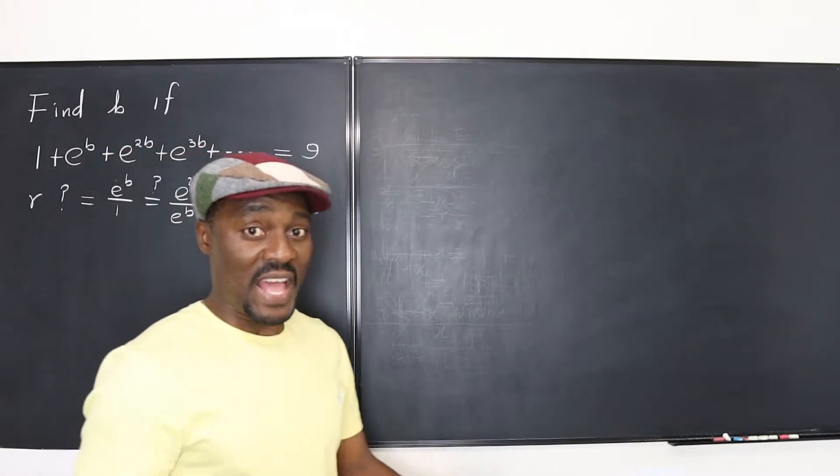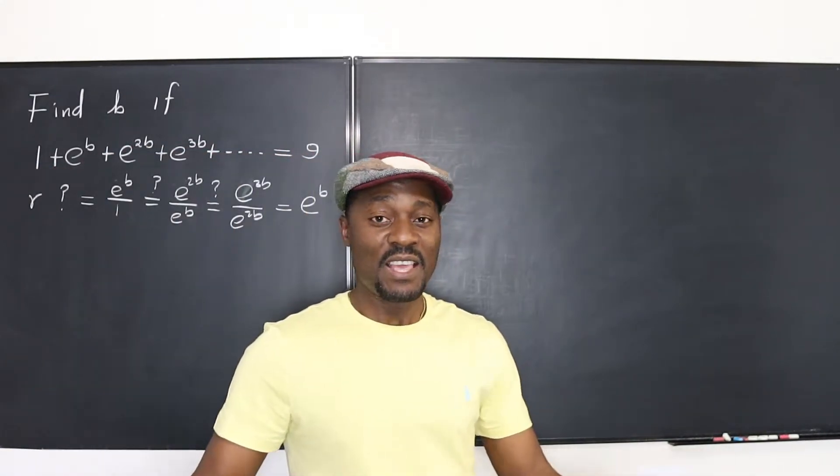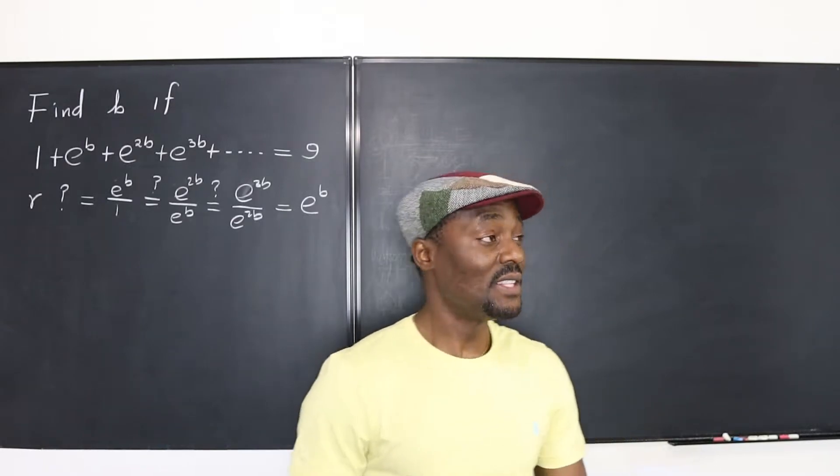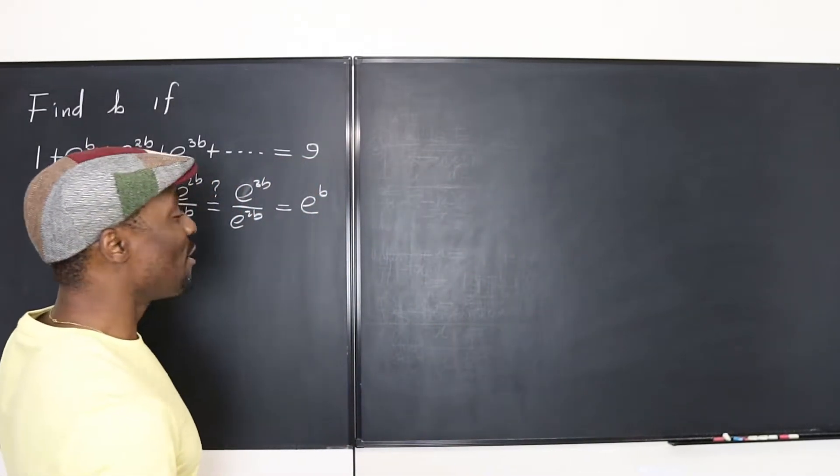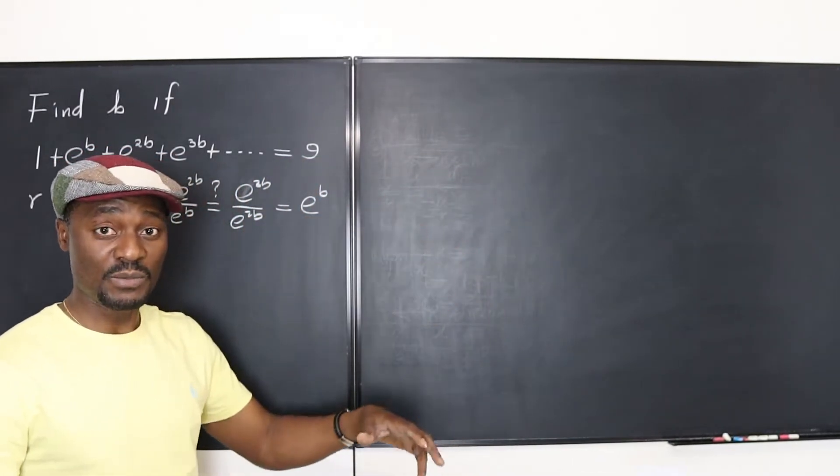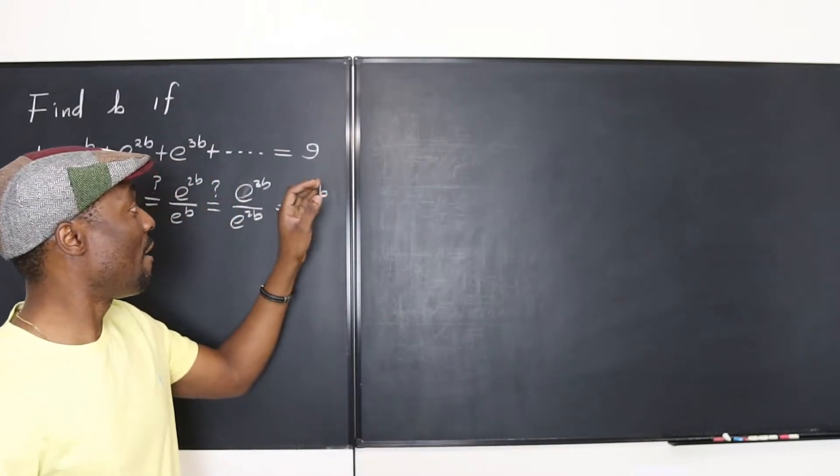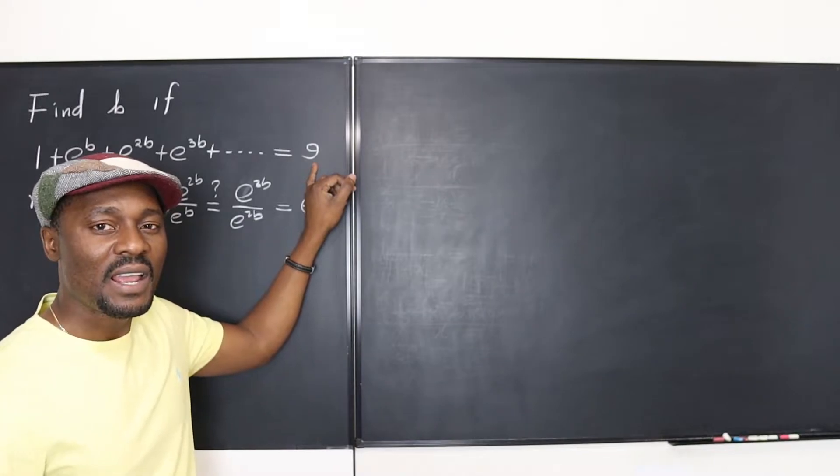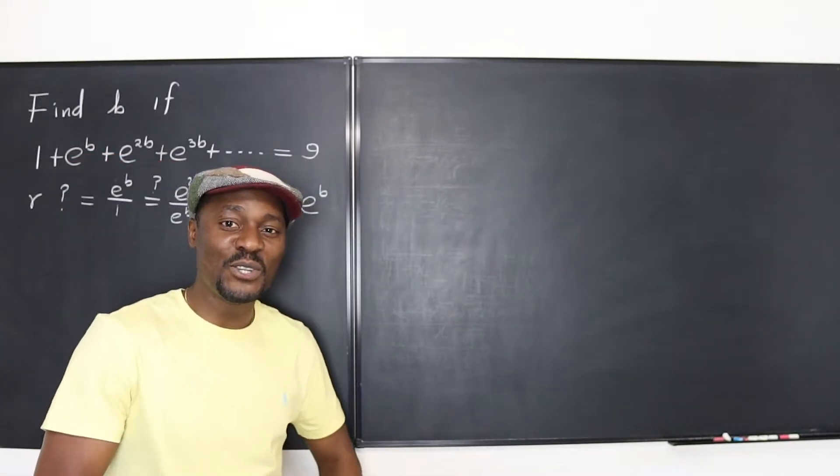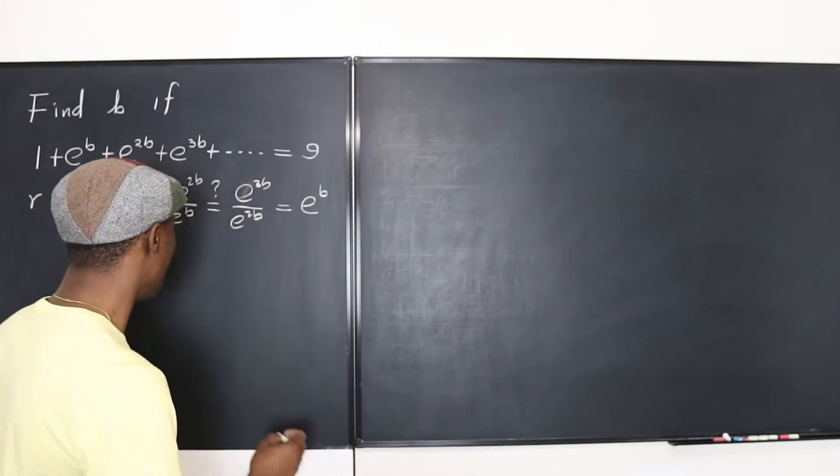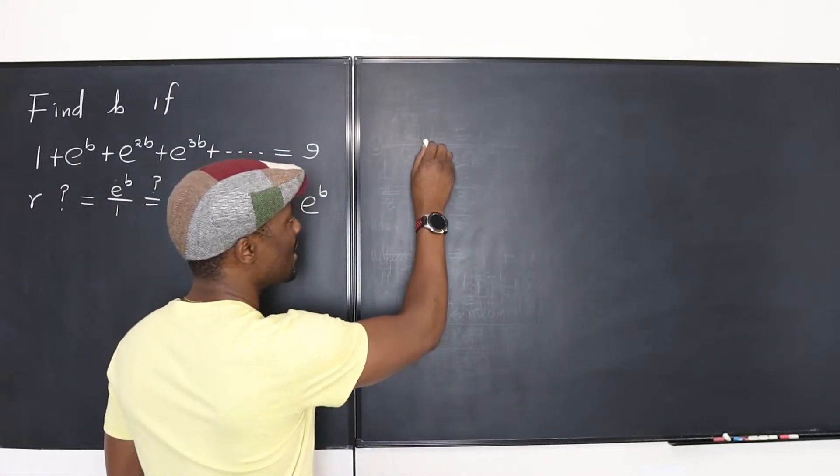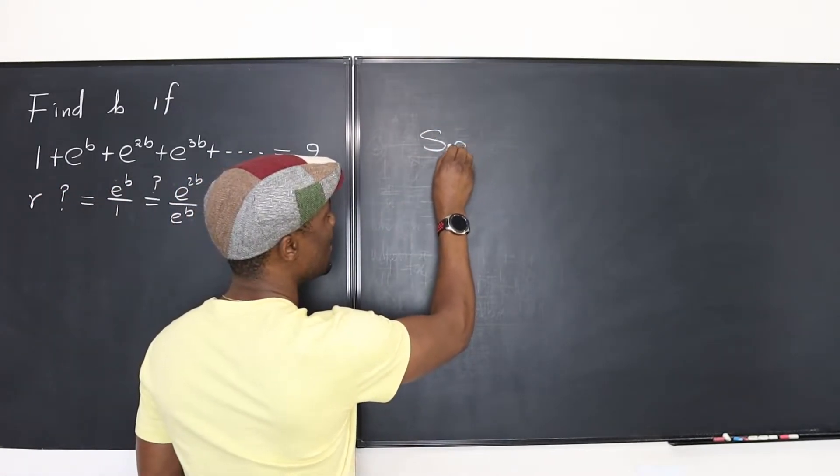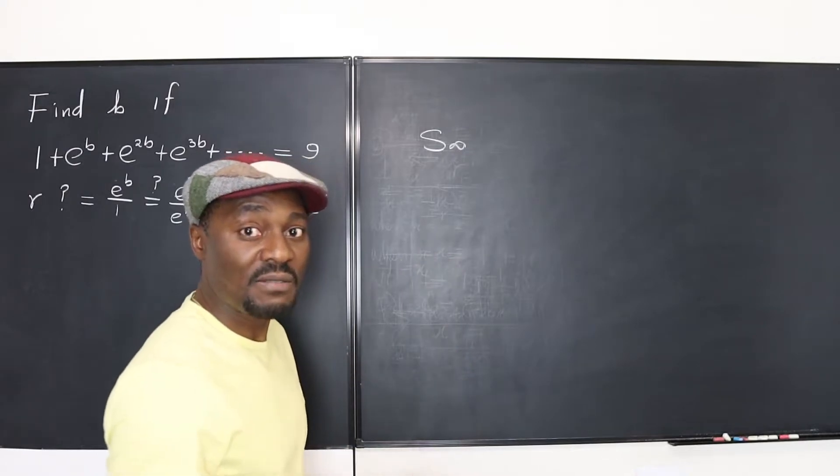So that's it. If you have a common ratio, and they tell you that when you add up all the terms infinitely, you're going to end up with a finite sum, which is 9, well, you just use the sum of a geometric series formula, which tells you that the sum, let's write it here,